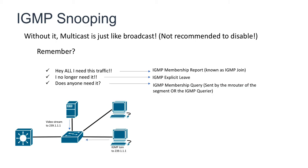Once a client is interested in receiving that traffic, it will send an IGMP join specifying that it wants to receive traffic for that specific group. When this happens, the switch will update its IGMP table and will forward multicast traffic from the server to that port. Keep in mind that it will only forward that traffic to the ports where it has received an IGMP membership report or IGMP join. That's the first of the messages.